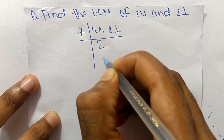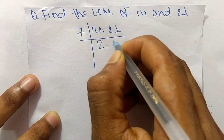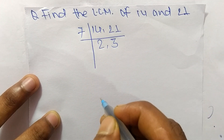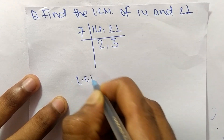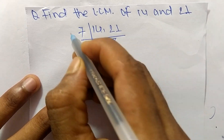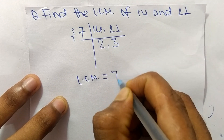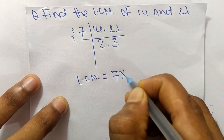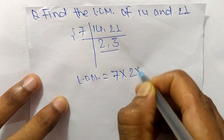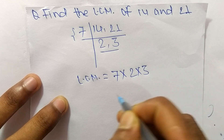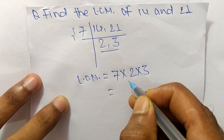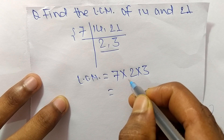7 times 2 equals 14, and 7 times 3 equals 21. So the LCM is calculated from these parts: 7 from the common factor, and 2 times 3 from the remaining factors, giving us 7 times 2 times 3.